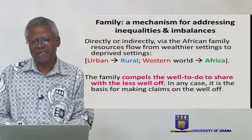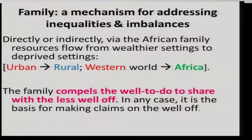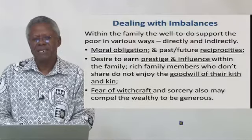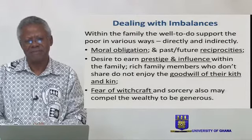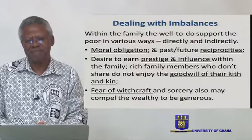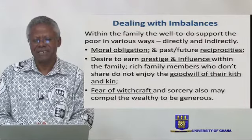Directly or indirectly, through the mechanism of the African family, you'll find that resources are flowing from wealthier settings to deprived settings — from urban areas to rural areas, from the western world to Africa. All that because the family compels the well-to-do to share with the less well-off. It is the basis for making claims on the well-off. Within the family, the well-off do support the poor in various ways, directly and indirectly. There is a moral obligation which compels people to address poverty if they have the means.